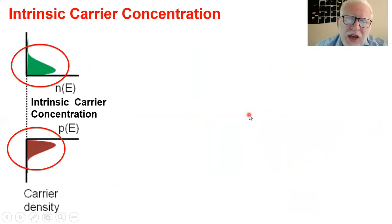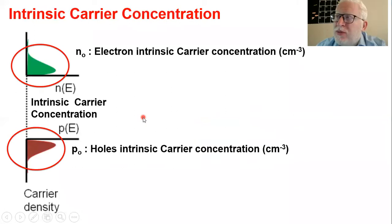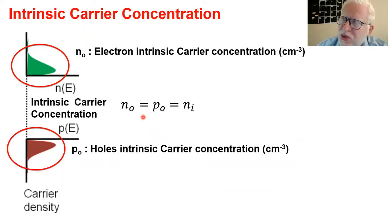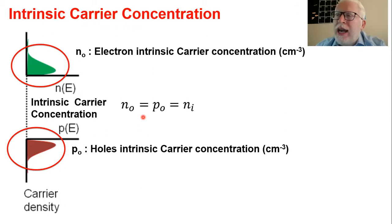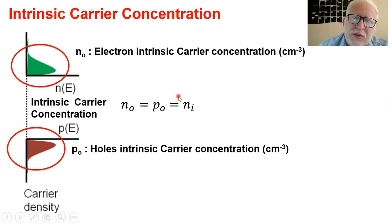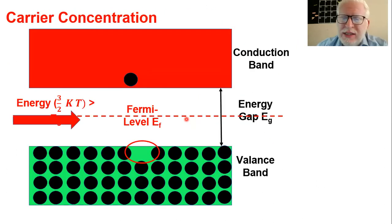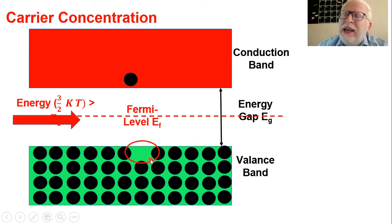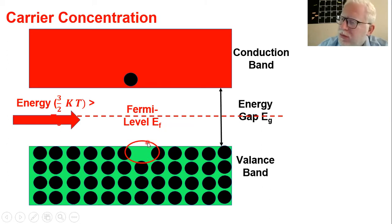Generally speaking, whenever the material is intrinsic, it is expected that the number of electrons in the conduction band equals the number of holes in the valence band. We call this the intrinsic concentration, or ni. This is a material parameter depending on the energy gap, temperature, and effective mass. So n0 equals p0 equals ni, which makes sense because whenever an electron is created in the conduction band, there is correspondingly a hole created in the valence band.